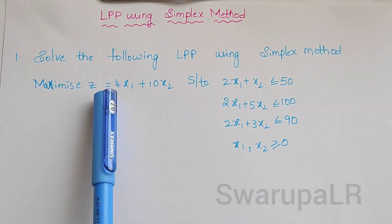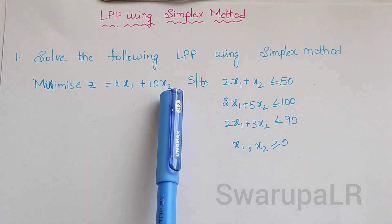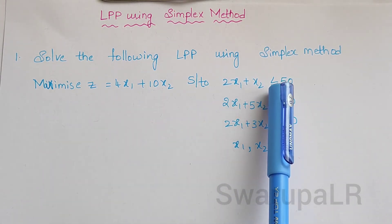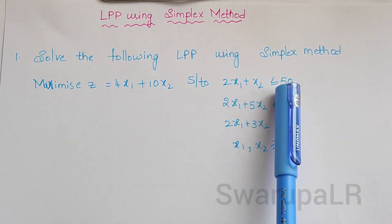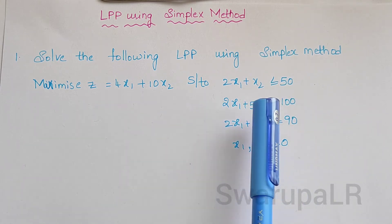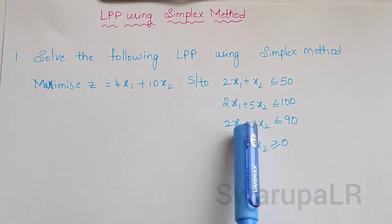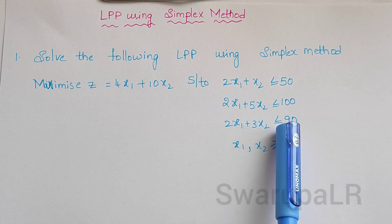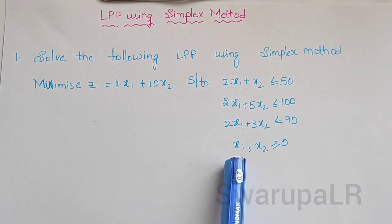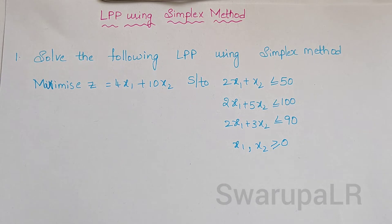Maximize z is equals to 4x1 plus 10x2, subject to 2x1 plus x2 is less than or equals to 50, 2x1 plus 5x2 is less than or equals to 100, 2x1 plus 3x2 is less than or equals to 90, where x1, x2 are greater than or equals to 0.